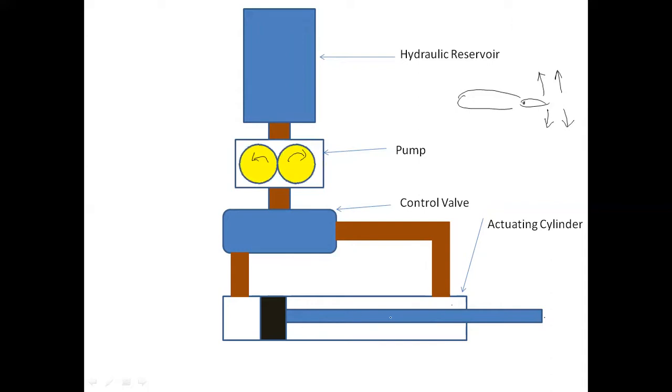As the piston is moving, this shaft which is connected over here is also moving. This shaft is connected to the control surface, so the control surface will also move. The fluid which is present over here will enter into the control valve again, and from here it will enter into the return line and the return line will take it back to the reservoir.